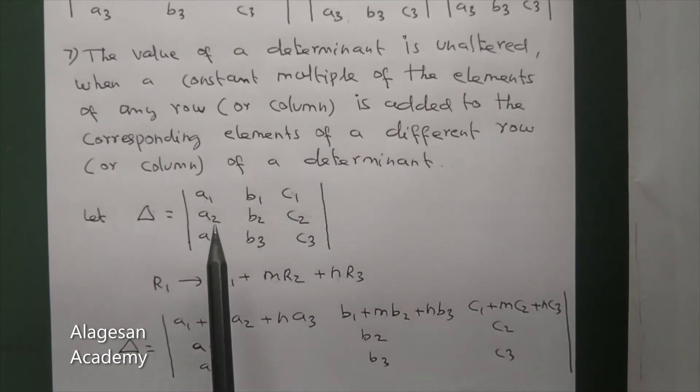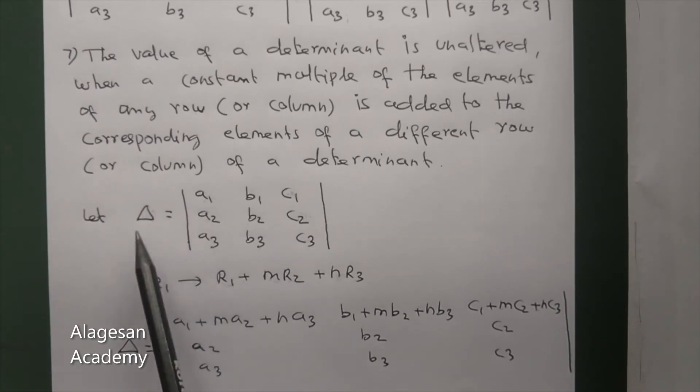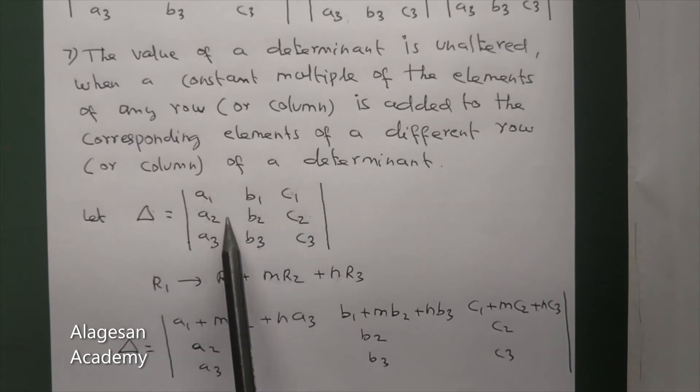Now for this row we need to apply, then the value of the determinant will change. Ok? Now let's examine the example. Let delta equal to the determinant with elements a1, b1, c1 in first row, a2, b2, c2 in second row, and a3, b3, c3 in third row.